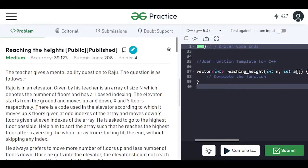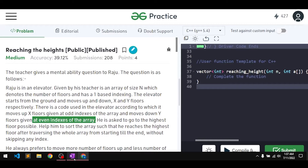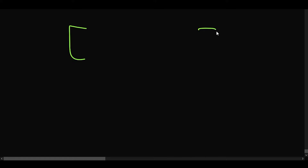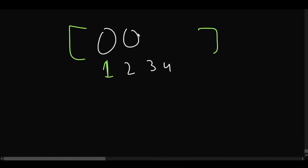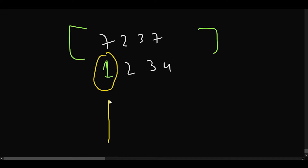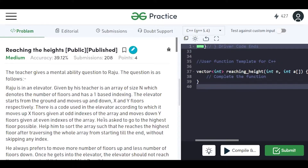There is a code used in the elevator: it moves x floors up at odd indexes and moves down y floors at even indexes of the array. For example, at index 1 (odd), if the value is 7, Raju goes 7 floors up. At index 2 (even), if the value is 2, Raju comes 2 floors down.